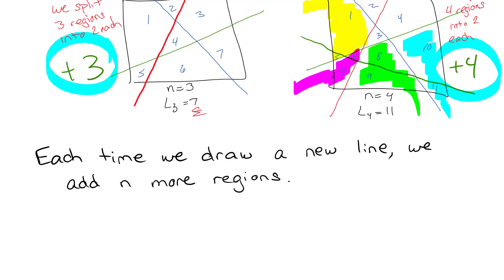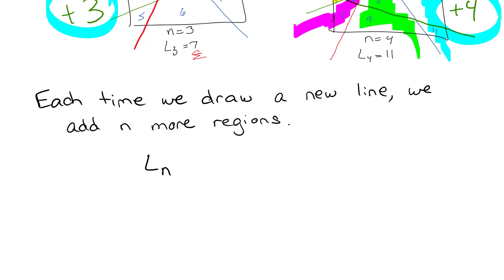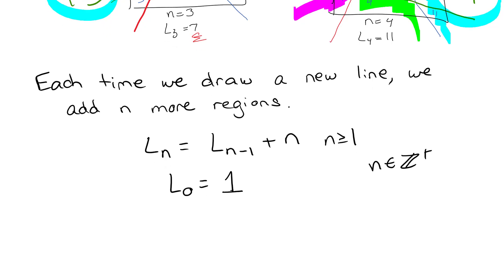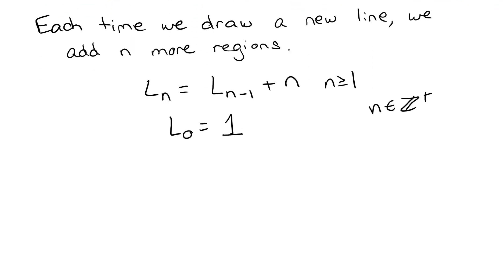Every time we have a new line we get the same number of regions as before plus n. So the recursive formula is L(n) = L(n-1) + n. The base case is L(0) = 1, and this is valid for n greater than or equal to 1, or n a positive integer. Now the question is: can we turn this into a closed formula? We'll start by listing the values and looking for a pattern, like in the Towers of Hanoi video.